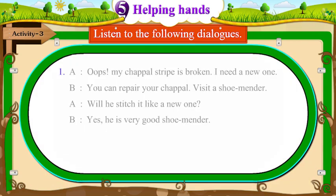Dialogue 1. A says: Oops! My chappal strip is broken. I need a new one. B says: You can repair your chappal. Visit a shoemender. A says: Will he stitch it like a new one? B says: Yes, he is a very good shoemender.